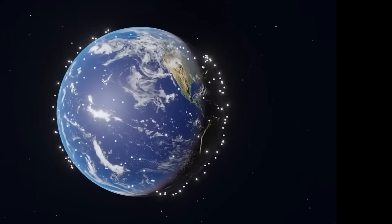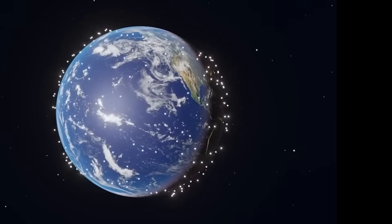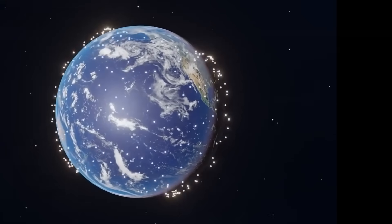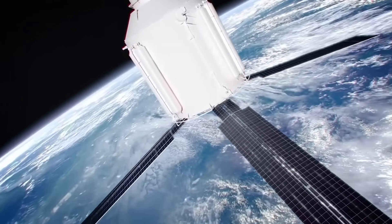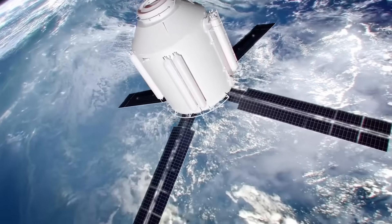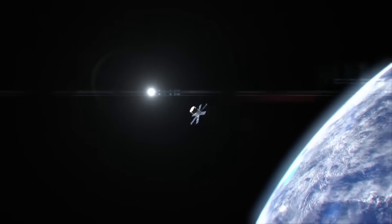Starlink has grown rapidly, providing internet to remote areas around the world. Recently, the service surpassed 6 million users globally. However, something unusual has occurred. In just six months, nearly 500 of its satellites were deliberately taken out of orbit.